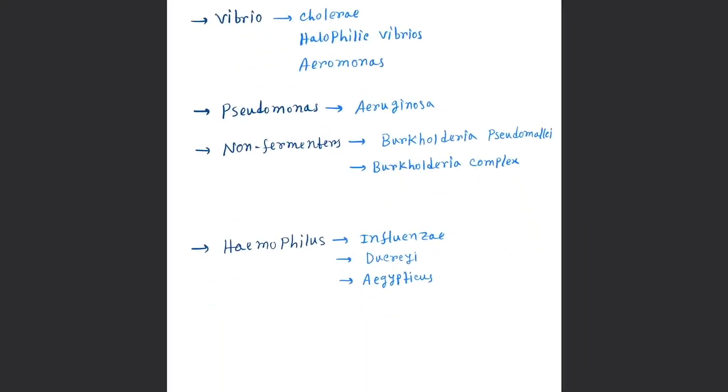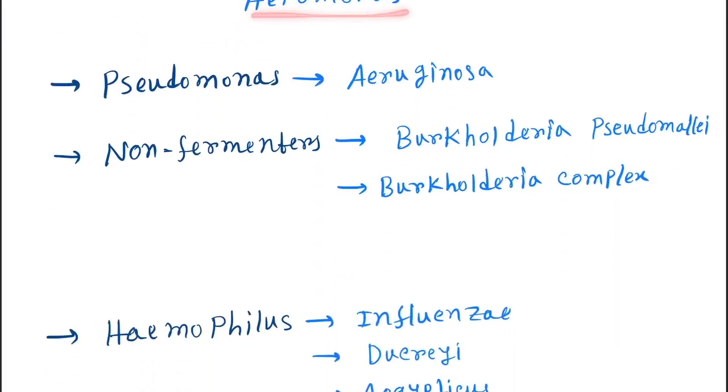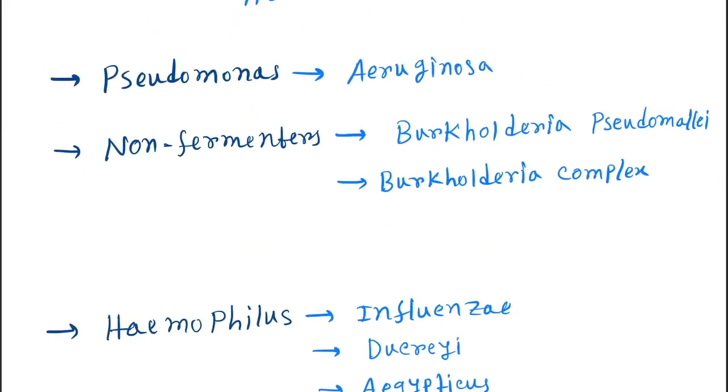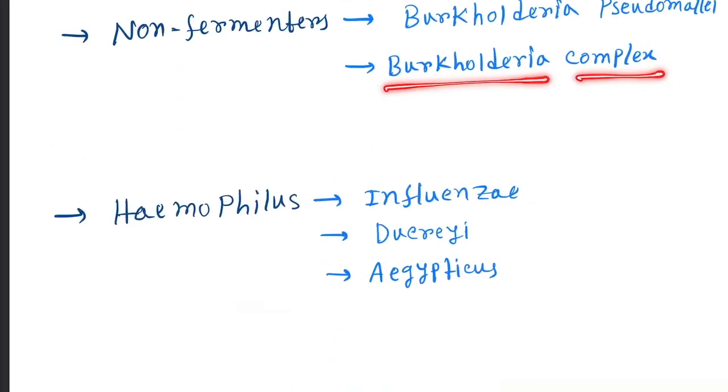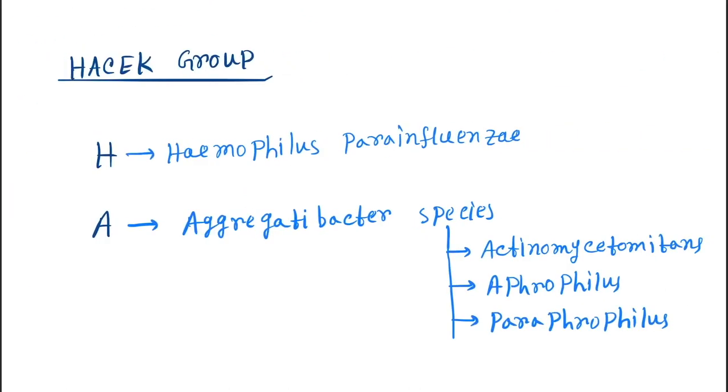Next is Vibrio, this is cholerae, halophilic vibrios, and Aeromonas. Next is Pseudomonas, here aeruginosa. Next is non-fermenters: Burkholderia pseudomallei and Burkholderia cepacia complex. Next is Haemophilus, under this influenzae, ducreyi, and aegyptius.